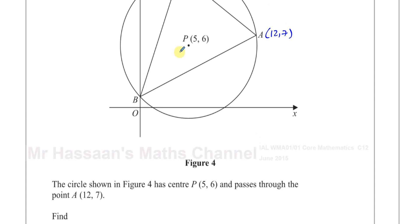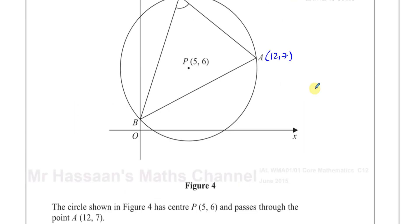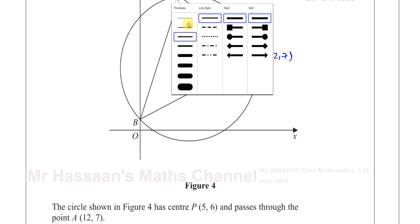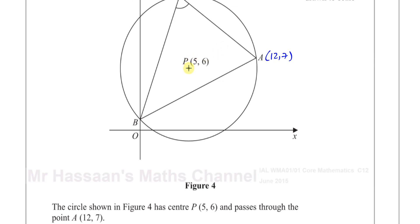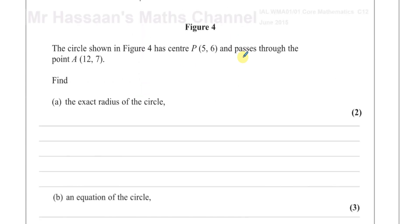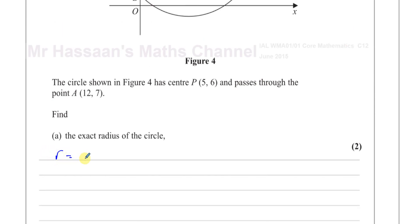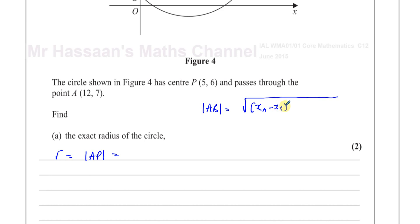Find the exact radius of the circle — so we've got to find the length between A and P. The radius goes from the center to a point on the circumference. We have the center P(5,6) and point A(12,7), so the radius is the distance between A and P. We use the distance formula: the magnitude between two points equals the square root of (x_A minus x_B) squared plus (y_A minus y_B) squared.